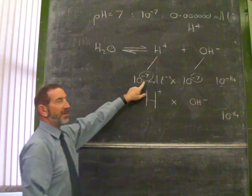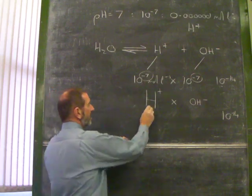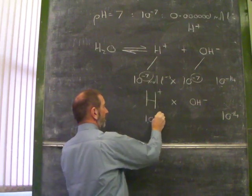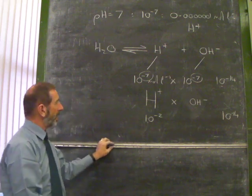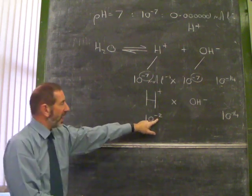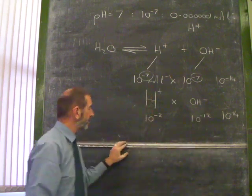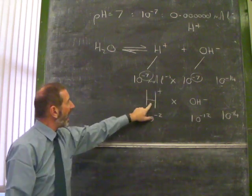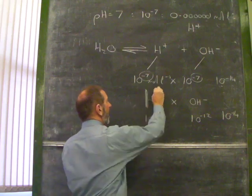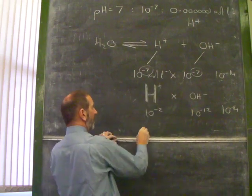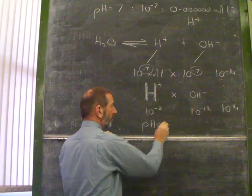Let's say, instead of being this small, let's say this has gone up to 10 to negative 2. Then, if this is as high as that, this will have to be much, much smaller, 10 to negative 12. Look at this. With a hydrogen ion concentration of 10 to negative 2, this will have a pH of 2.